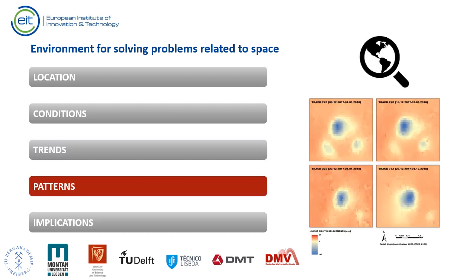We can also use GIS analytical capabilities to identify patterns that exist in data. For example, we can look for variables that explain the character of subsidence occurring on the ground above underground mining operations. Potential variables may include depth of mining, thickness and inclination of mineral deposits, mining system used, and hydrogeological conditions. The same approach can be applied to analyze seismicity induced by mining or large man-made water reservoirs, and susceptibility to landslides or avalanches.